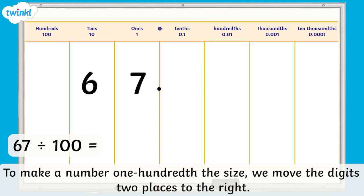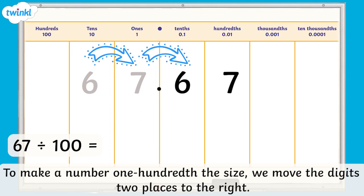Let's take a look at the calculation, 67 divided by 100. The 6 moves two places into the tenths column, and the 7 moves into the hundredths column. We can show that there is no value in the ones column by using 0 as a placeholder, like this. So, 67 divided by 100 equals 0.67.